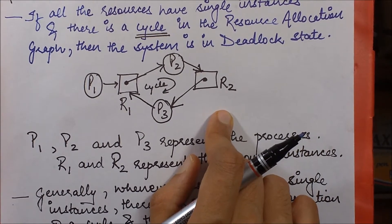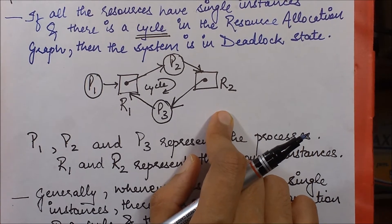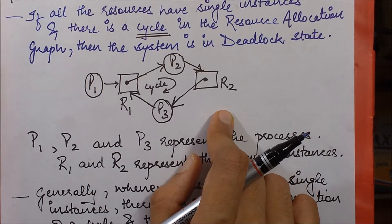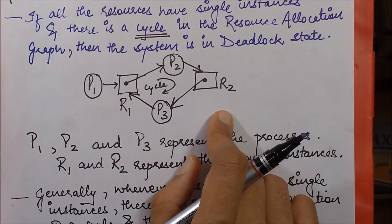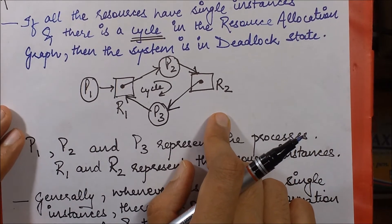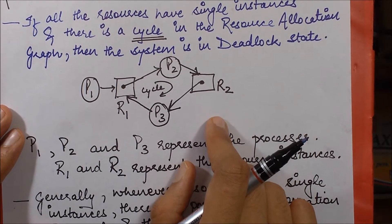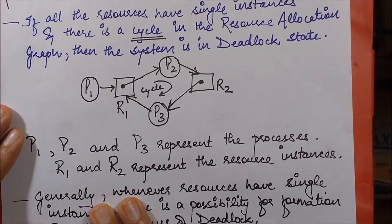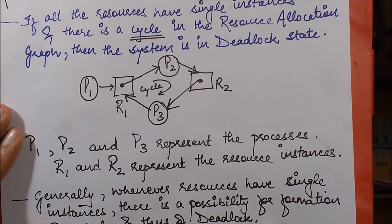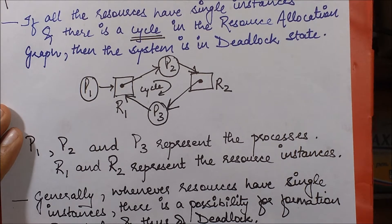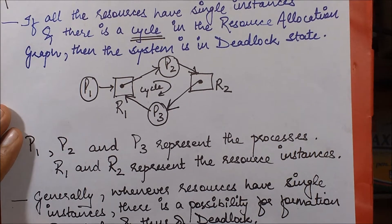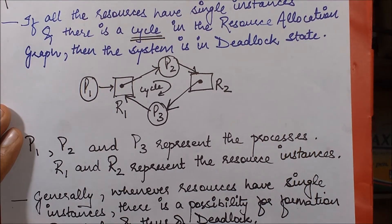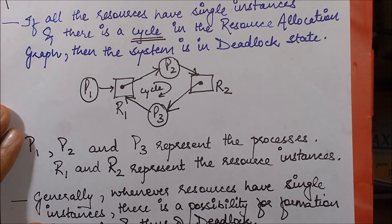None of the processes will be able to complete — this is a deadlock state. The resource allocation graph is a technique to identify whether a deadlock exists in a system. When we draw this graph and a cycle is formed, we can surely say there is a deadlock. If no cycle exists, a deadlock may or may not occur, but a cycle definitively indicates a deadlock state.